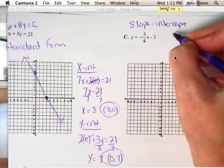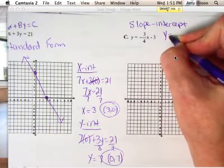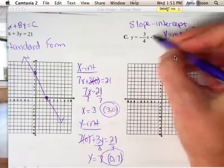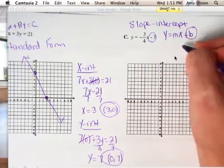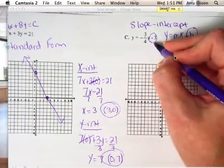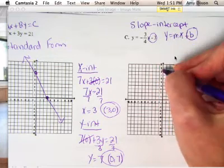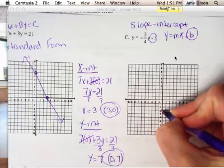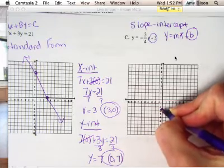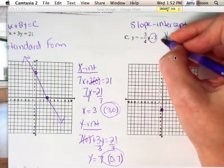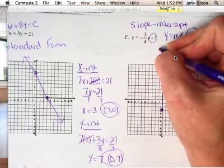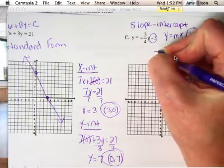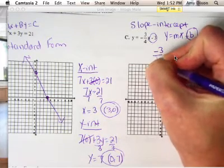For slope-intercept form, that's Y equals MX plus B. We start with B — that's the last number in your equation. You put that on the Y axis; that is your Y intercept, where it crosses the vertical axis. So we put a point at negative 3. And then our slope is negative 3 fourths. The negative either has to go with your rise or your run. I'm going to put it with the rise: negative 3 over positive 4.